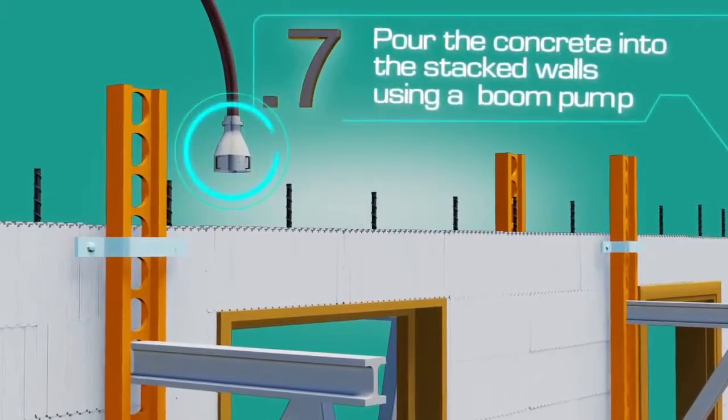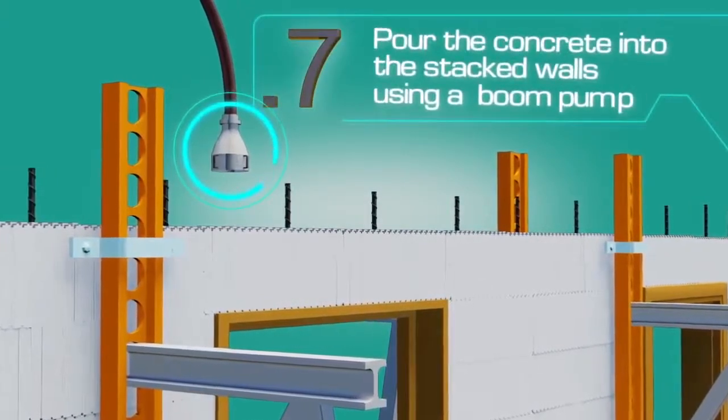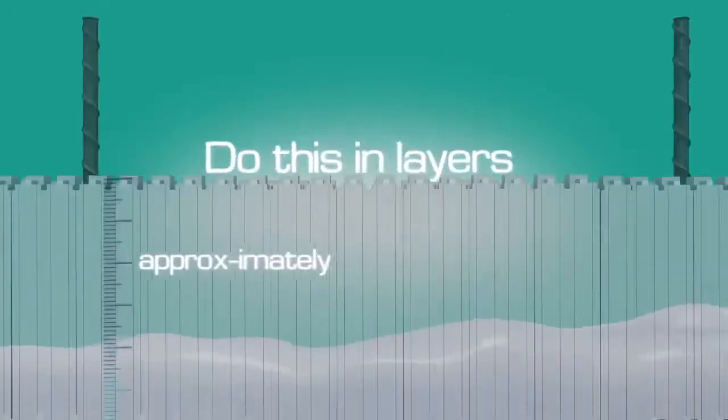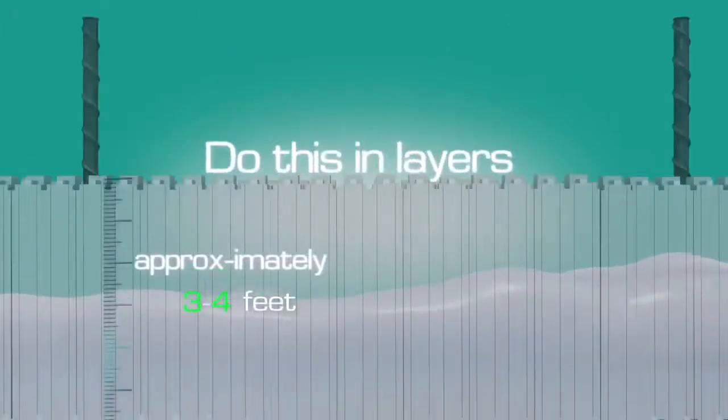Pour the concrete into the stacked walls using a boom pump. Do this in layers, approximately three to four feet at a time, circling the structure until the top of the wall is reached.